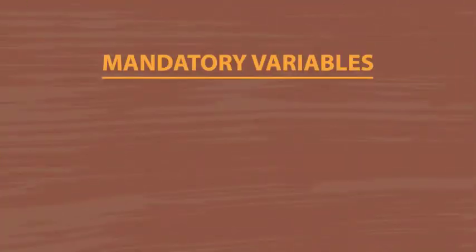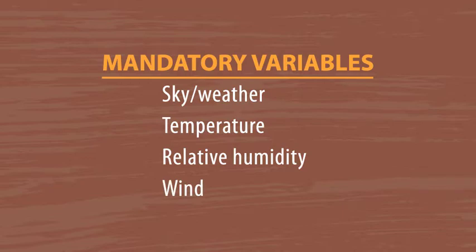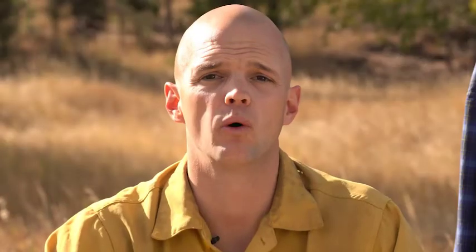Now on to the mandatory variables. Every fire weather forecast includes four mandatory forecast variables — they are the most important and the easiest to measure. They are sky weather, temperature, relative humidity, and wind. For more information regarding the content in this video, you should check out the NWCG Guide to Fire Weather Forecasts, PMS 425.